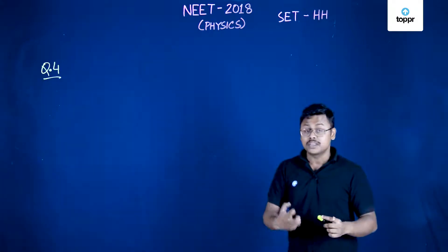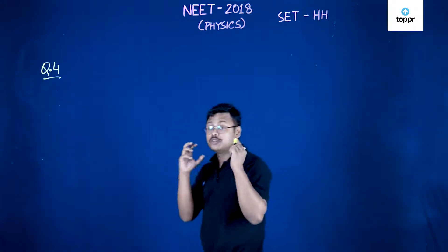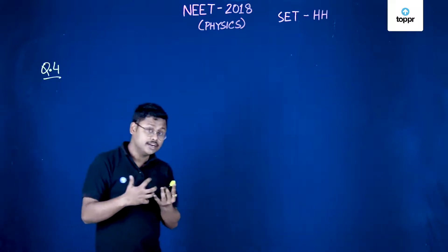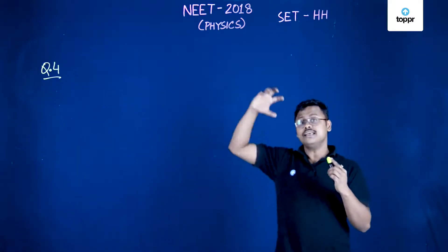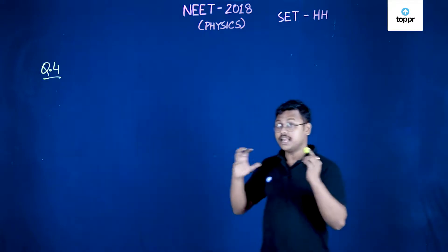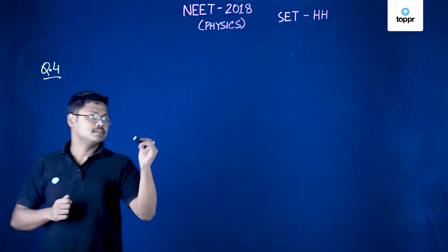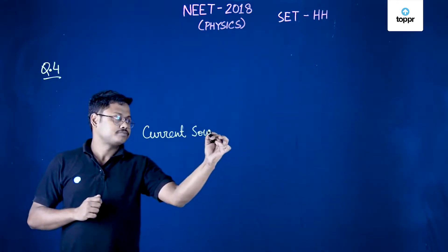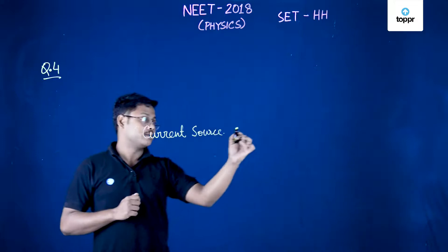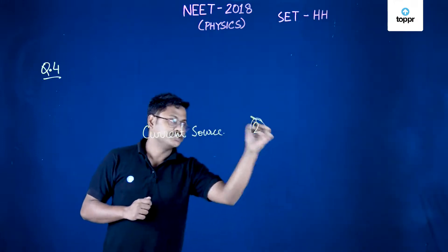It comes from the source of the current, because the current source is creating the magnetic field. And due to the repulsive force of the magnetic field, it is gathering gravitational potential energy. So the correct answer is current source, and the correct option is option 2.